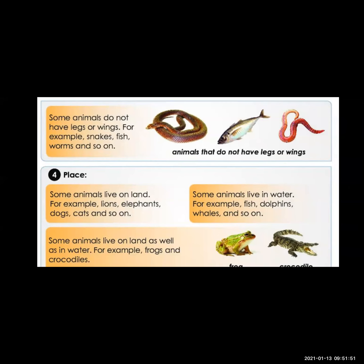Some animals live on land. Animals like lion, elephant, dog, and cat live on land. Some animals live only in water — fish and dolphin live in water and cannot live without it. But some animals live both inside the water and on land. Frog, crocodile, and tortoise are examples of animals that live both in water and on land.